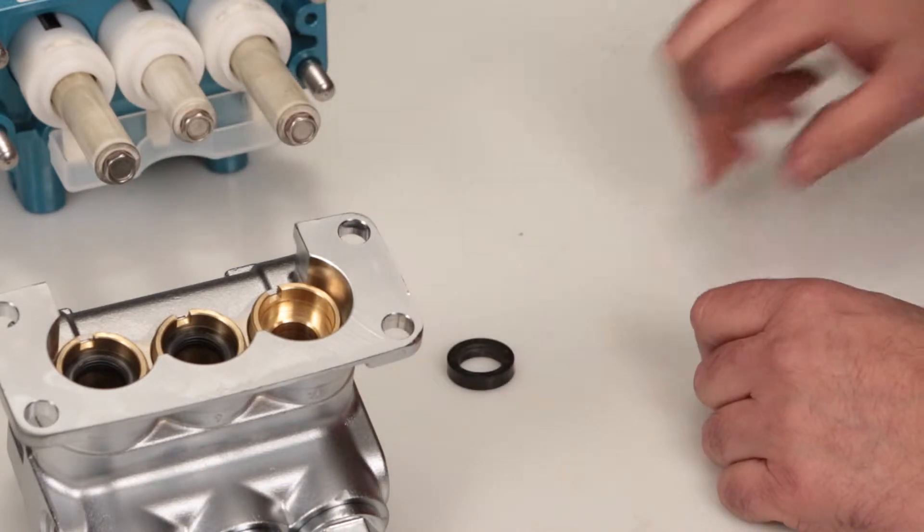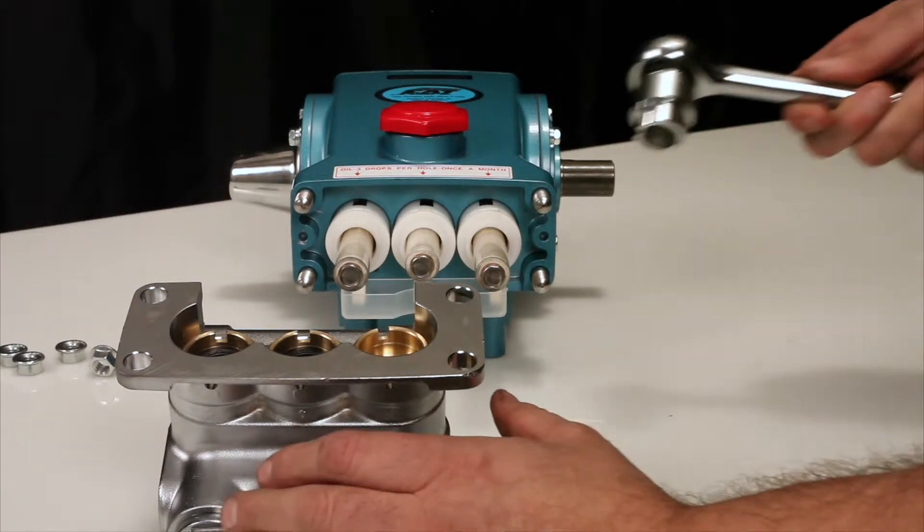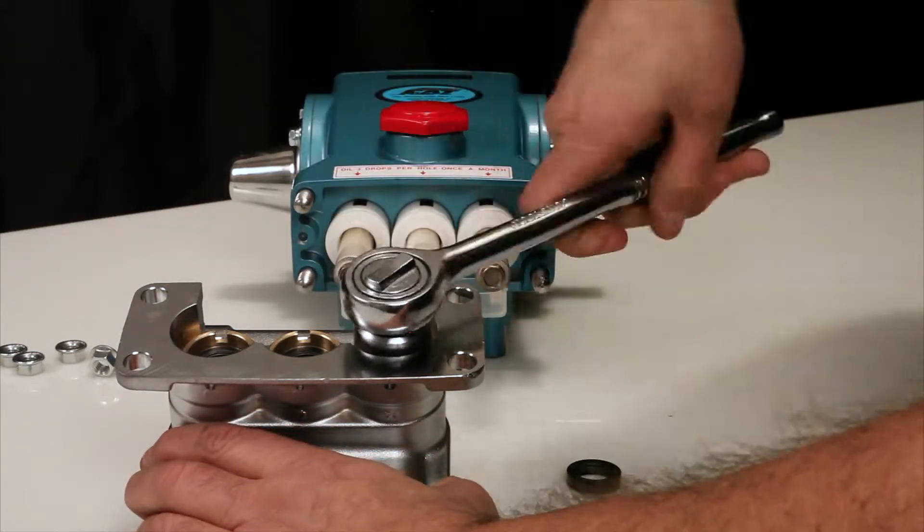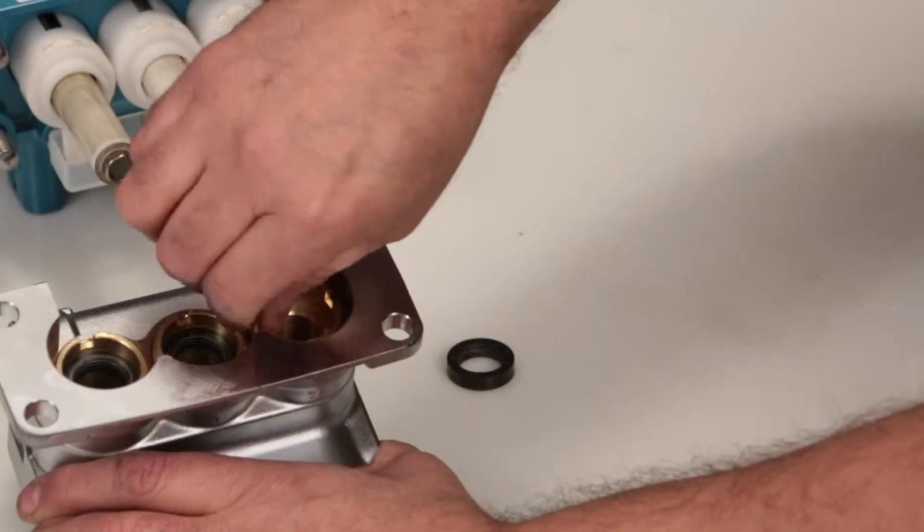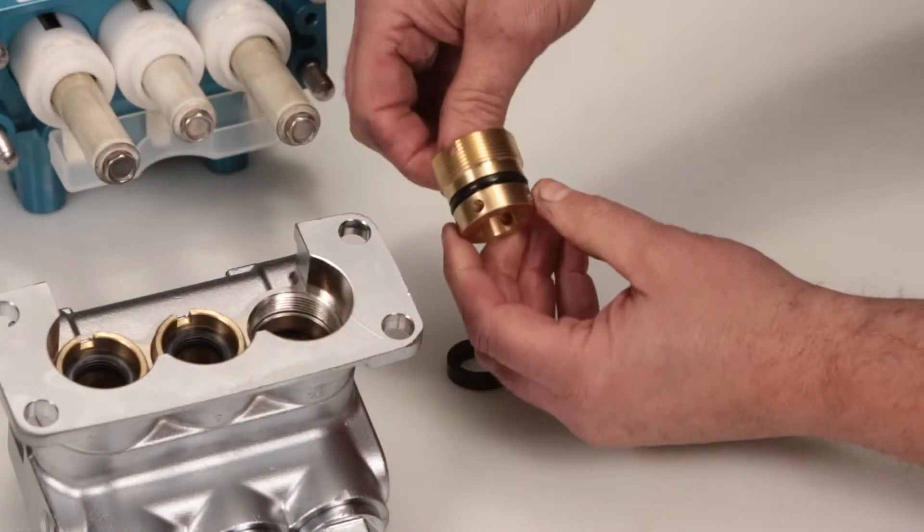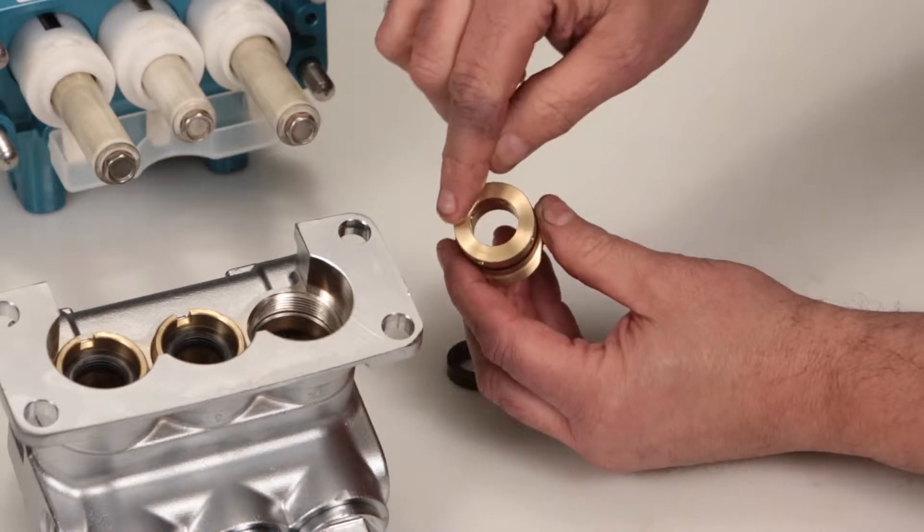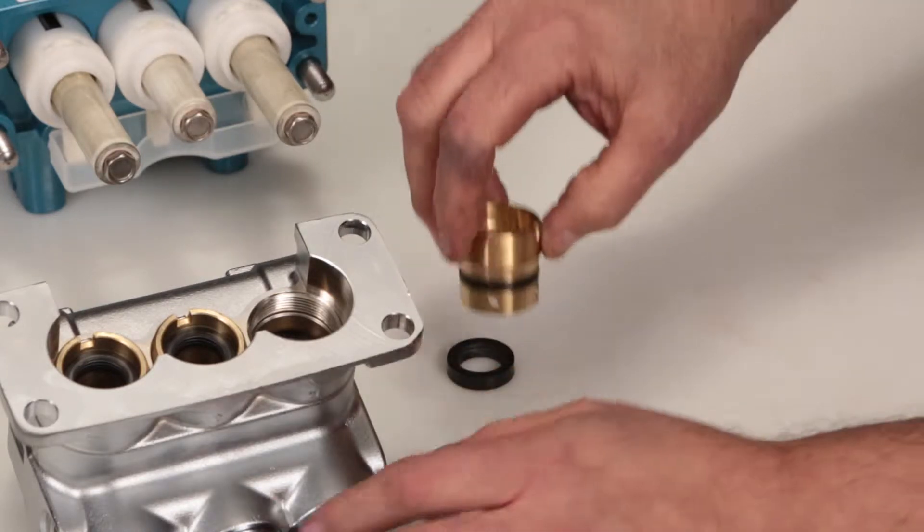Using a half inch seal case tool or t-wrench, remove the seal case. Inspect the seal case o-rings for cuts, nicks, or damage, and also the high pressure surface of the seal case for scoring or damage.